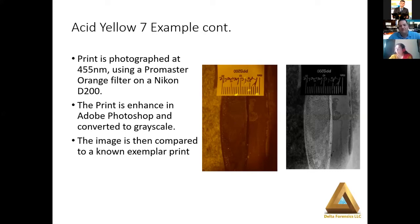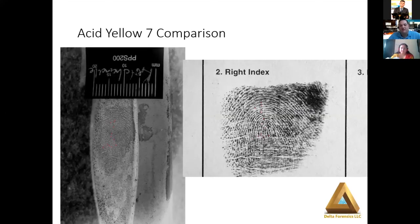We are now able to compare this print to our known exemplar. This is a situation where many traditional blood techniques may not have given you the opportunity to conduct further examinations due to limited visualization and inability to develop contrast. But viewing this as a fluorescent impression, we can see the comparison — and I know it's a legitimate identification because it's my finger. We are able to see enough detail that corresponds between the two prints to arrive at the conclusion of an identification.